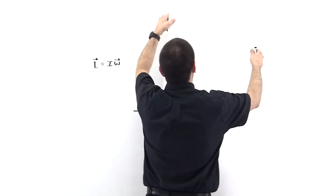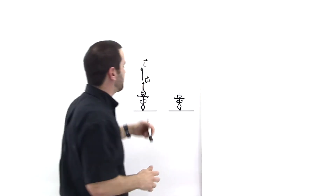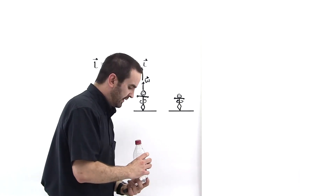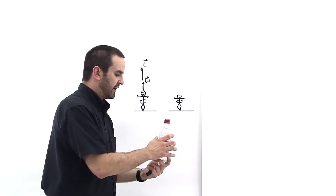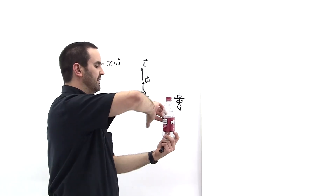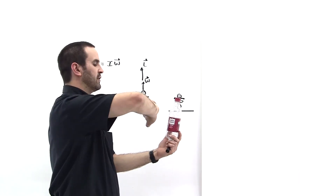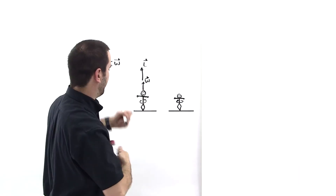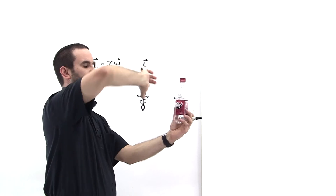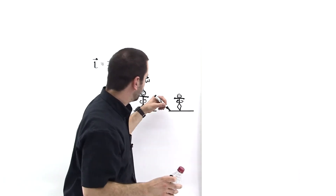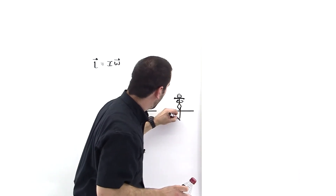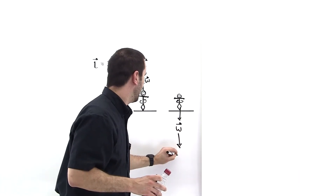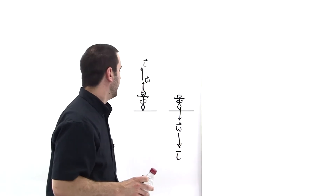Now this person is rotating the other way. You take your right hand — it always has to be your right hand — and curl your fingers around in the direction of rotation. Your thumb is pointing down. So we know L = Iω, meaning L is proportional to omega and points in the same direction.